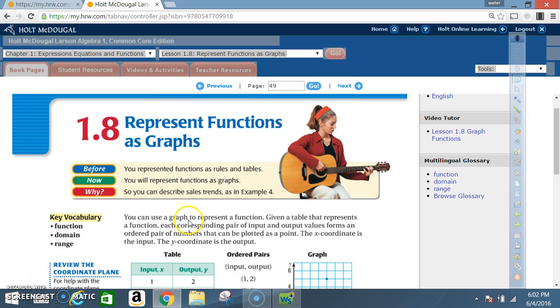You can use a graph to represent a function. Given a table that represents a function, each corresponding pair of input and output values forms an ordered pair of numbers that can be plotted as a point. The x-coordinate is the input. The y-coordinate is the output.